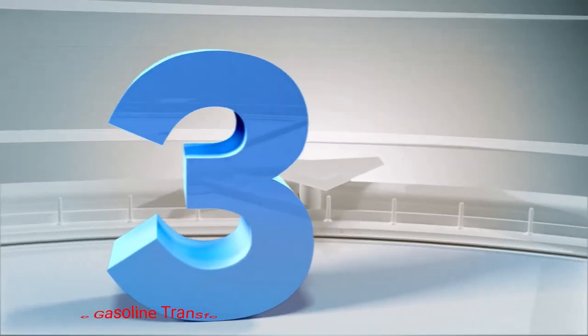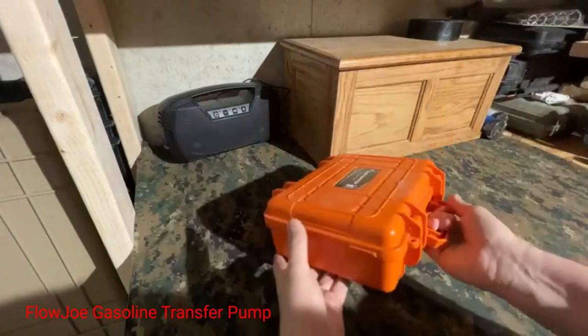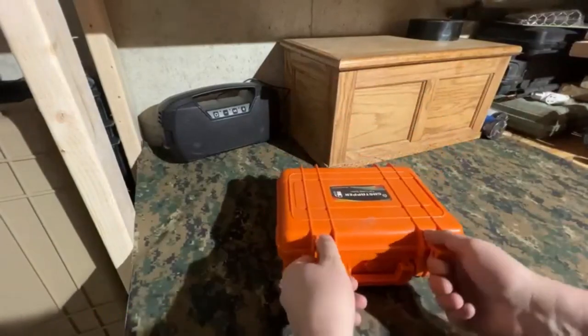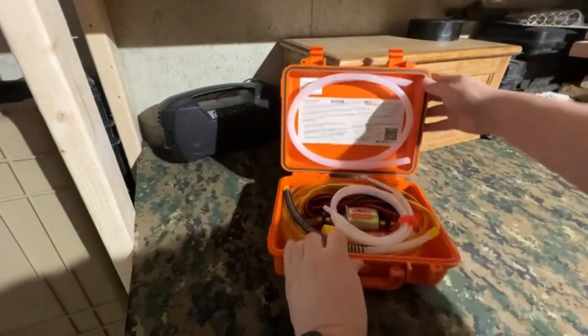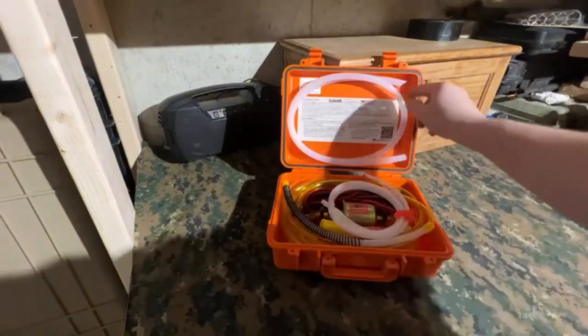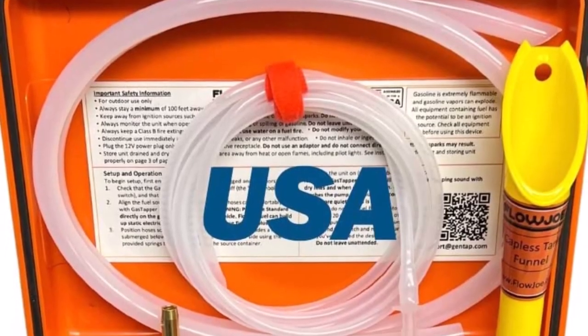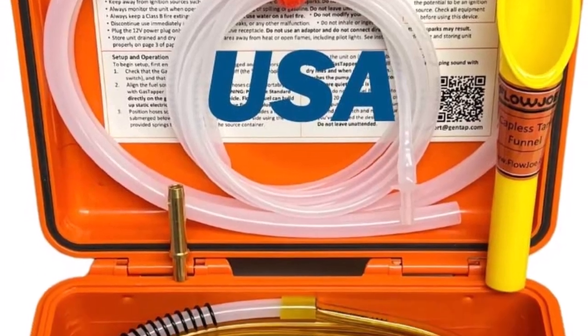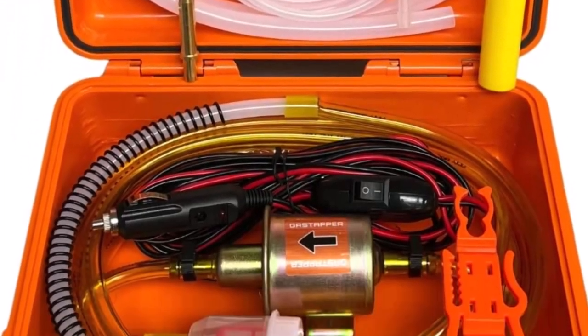Number 3. Flojo Gasoline Transfer Pump. This is an easy-to-use device with everything neatly and comfortably packed away in a large case. As an electric transfer pump, it works quickly to transfer liquid from point A to point B. This also means it's able to transfer more fuel in less time.